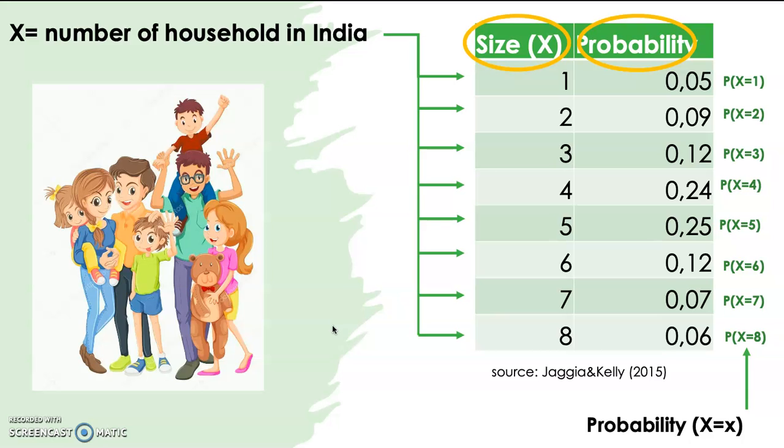Now, I assume you have fully understand the concept of random variable. Since I have mentioned here the probability of each of the random variable and the term probability distribution, let us continue our discussion to probability distribution.